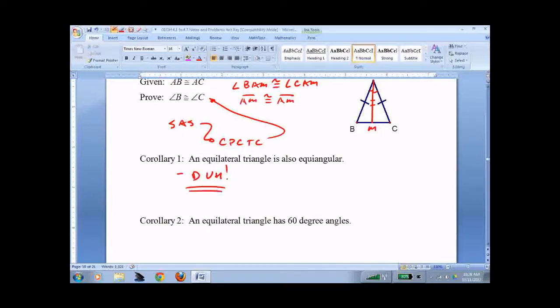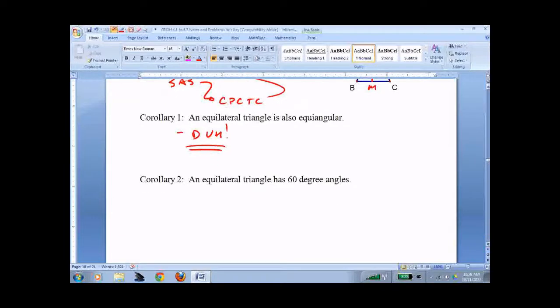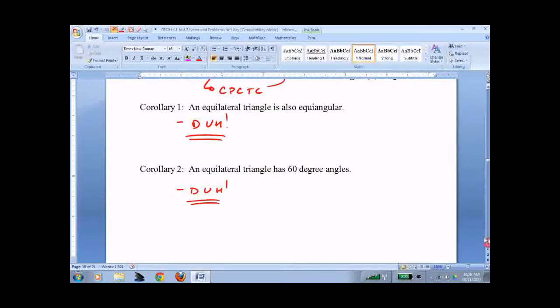So I hate to do it, but I have to say, well, duh. And then we've already done this one too. An equilateral triangle has 60 degrees. So again, I say, duh. All the angles are going to match up.